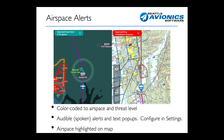For example, on the left-hand side of the screen, we're approaching class D airspace, which in the digital map is colored in a teal. On the other hand, on the right-hand side, we're approaching a prohibited area. In this case, we're using bright red indicating a warning before you go into the prohibited area.